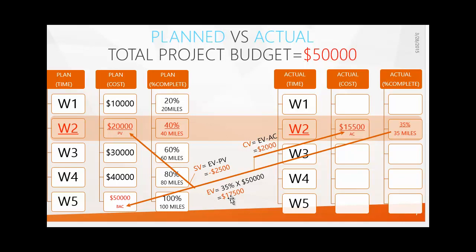Now we'll see the project performance — how much it varied in terms of cost and schedule. First, let's consider Cost Variance (CV). For 35 miles of work, she could spend seventeen thousand five hundred dollars, but in real time she spent only fifteen thousand five hundred dollars. Taking the difference between EV and AC gives us two thousand dollars — that is the Cost Variance.